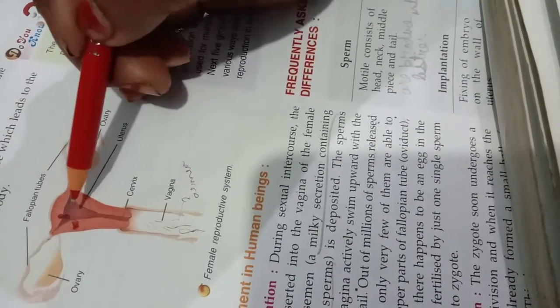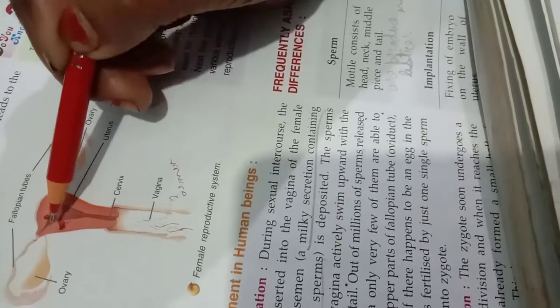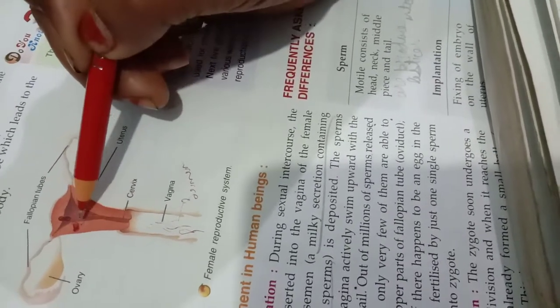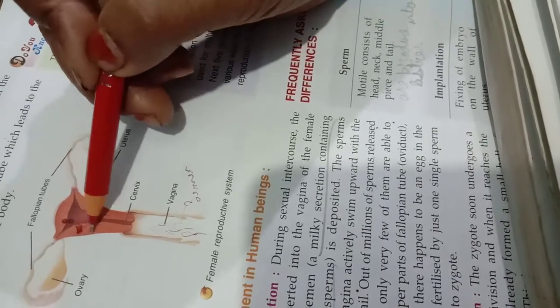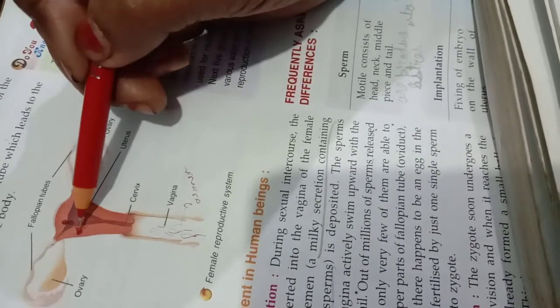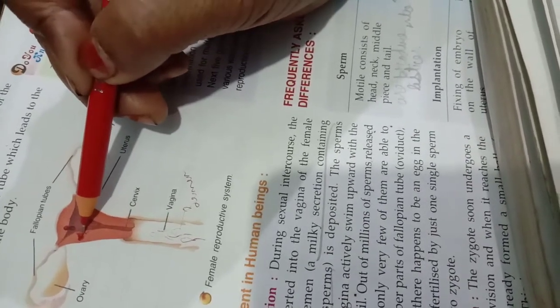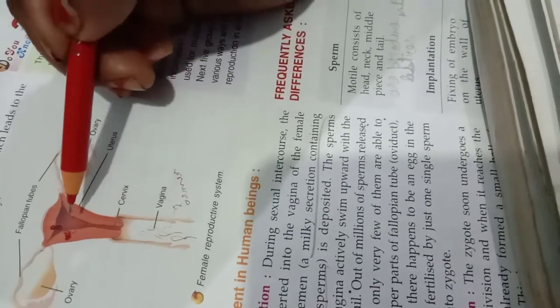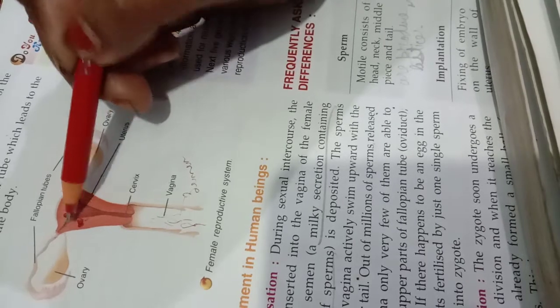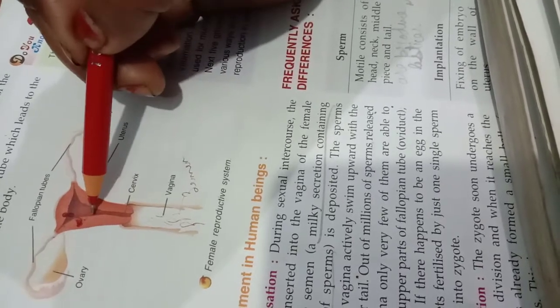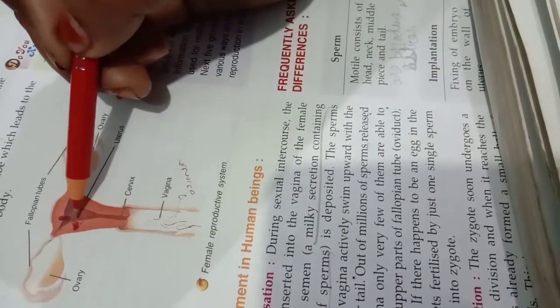So what is implantation? The fixation of embryo on the walls of the uterus or womb after fertilization is called as implantation. Now what happens? The next stage is the gestation. What is gestation? From the time of fertilization till the baby is born, that period is called as gestation. It differs in different animals.